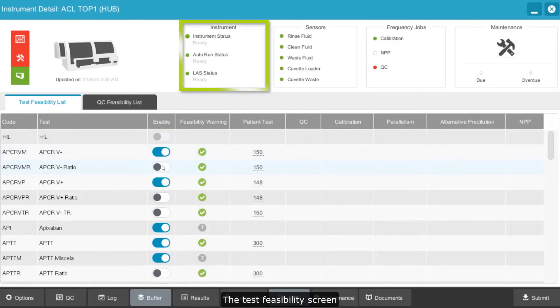The test feasibility screen displays key instrument and status sensors at the top, providing cues for the operator and allowing for increased walk-away time, enabling staff to focus on value-added activities.